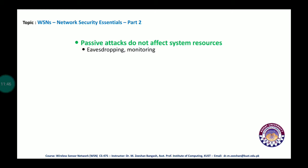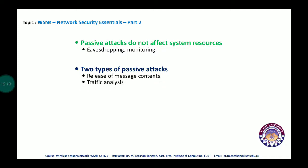Passive attacks do not affect system resources. Examples include eavesdropping and monitoring, and they are very dangerous because they remain unnoticed. The two types of passive attacks discussed are: release of message contents and traffic analysis. They are very difficult to detect because there is no change in the communication content, so neither the sender nor the receiver can easily detect that the link on which they are communicating has been compromised. Most of the time they only find out after a mishap occurs and they analyze the link.